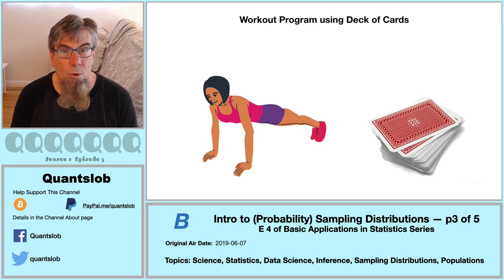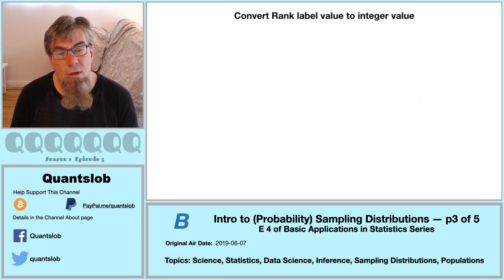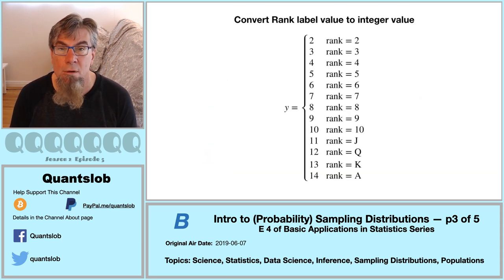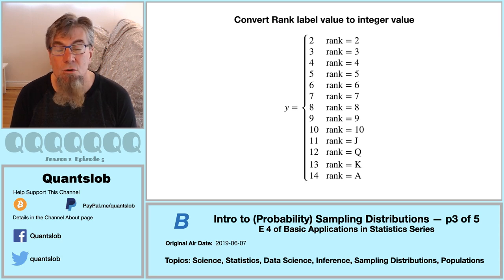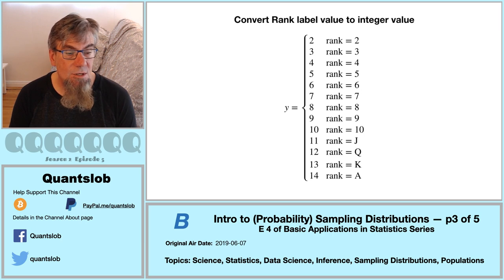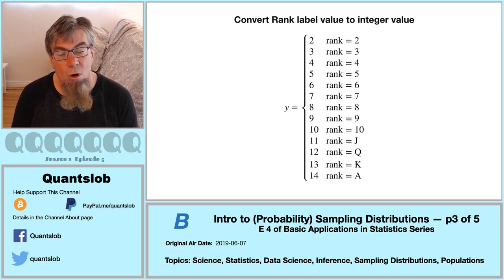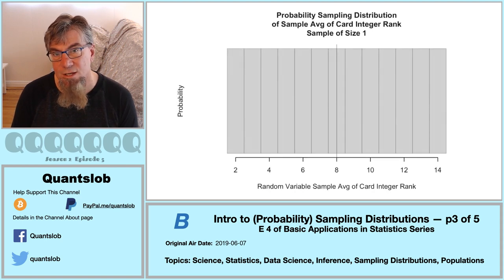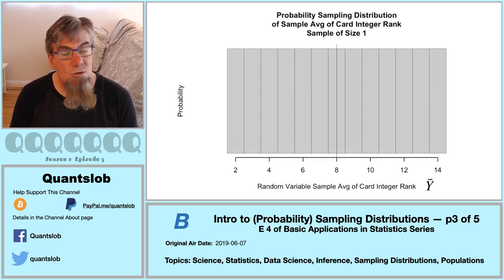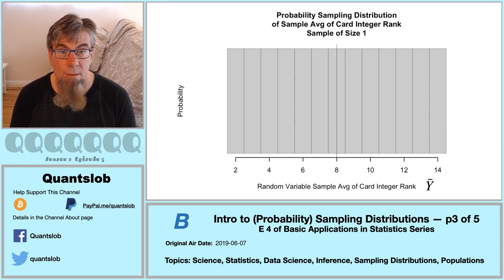You would flip a card — if the card were a queen, that meant you had to do 12 reps. Then your partner would flip the next card; if she got an ace, they would do 14 reps. You'd each take turns until you had flipped all the cards — 26 sets each. Here is the sampling distribution of the average of the card integer ranks for a theoretical sample size of one. This graph is a histogram.